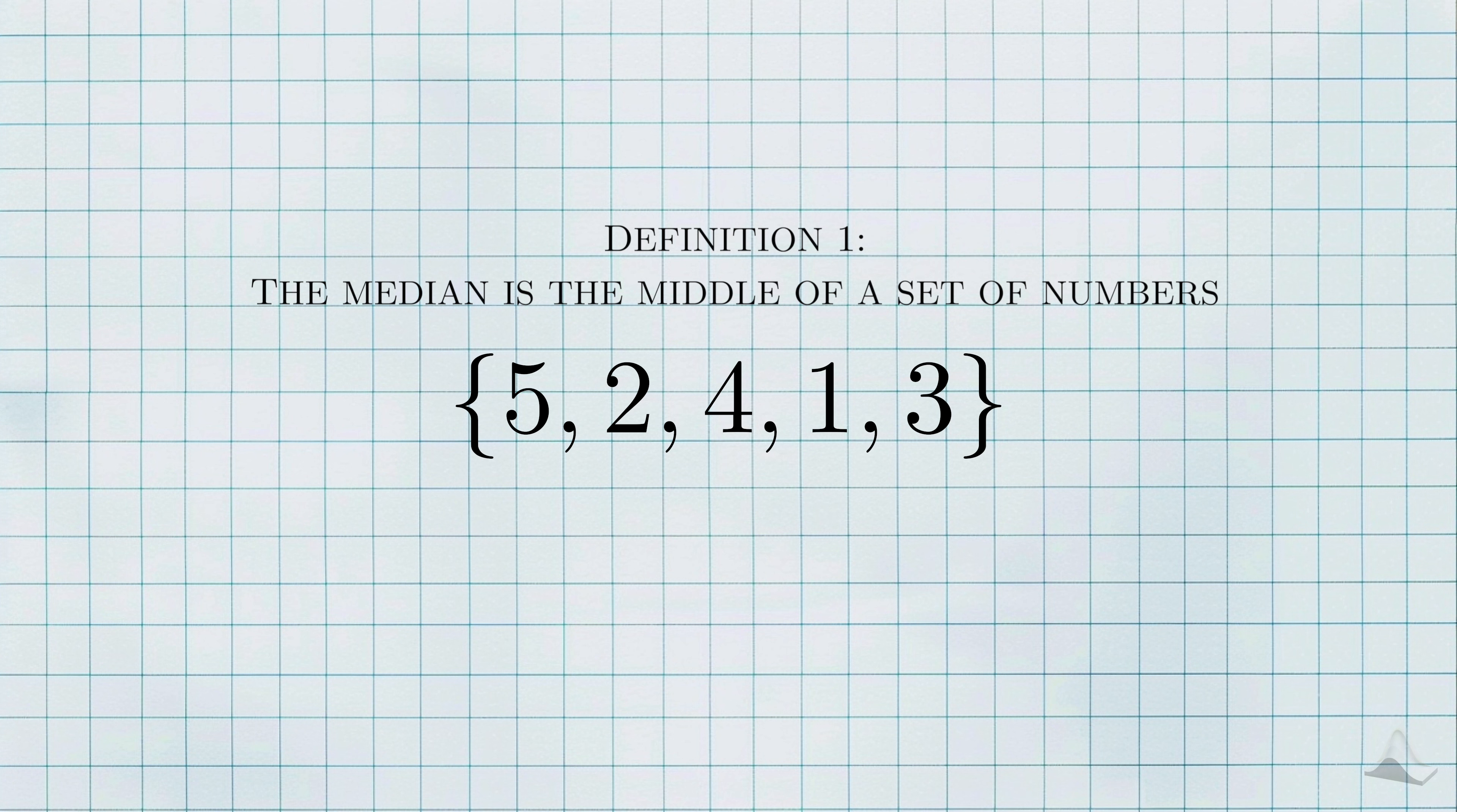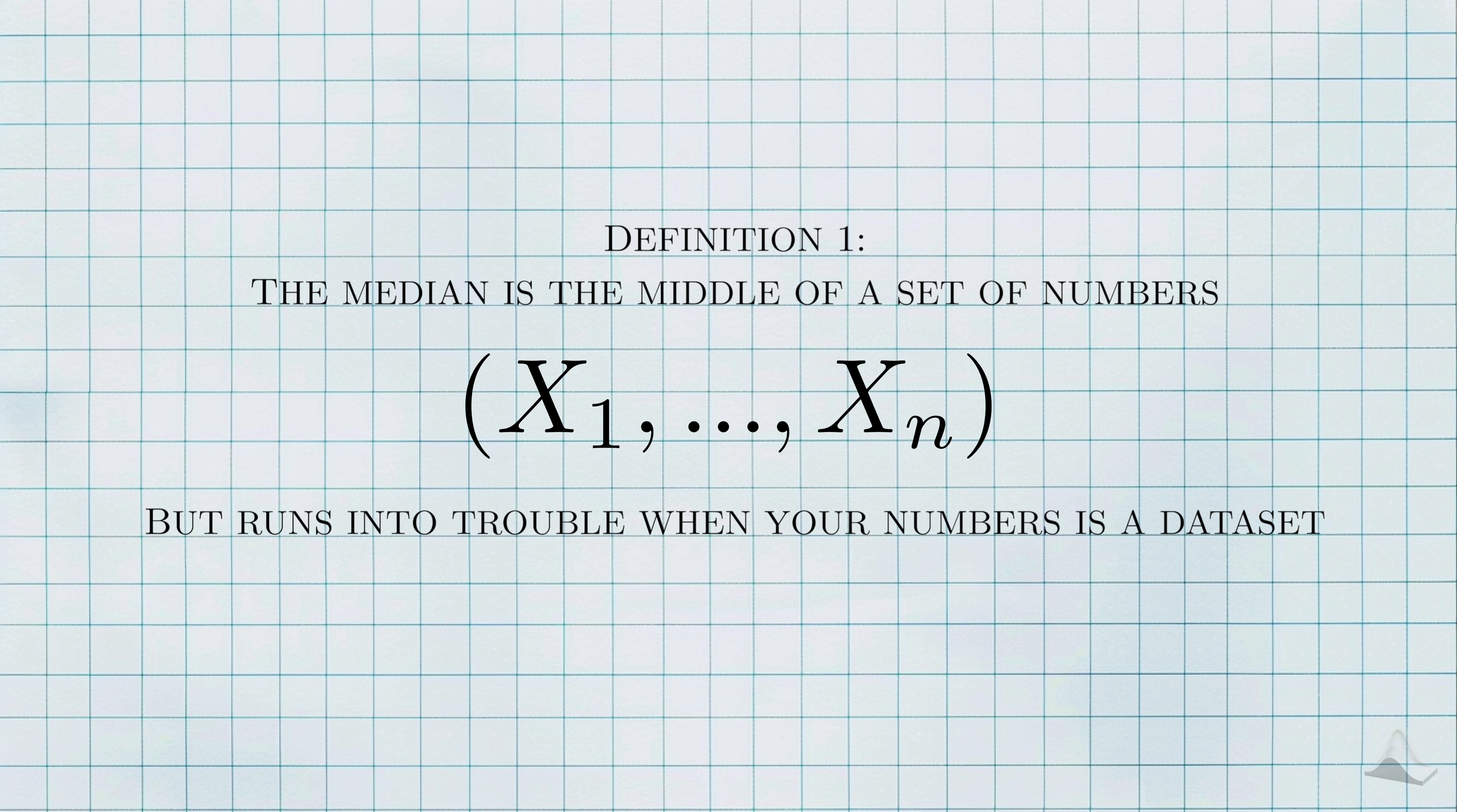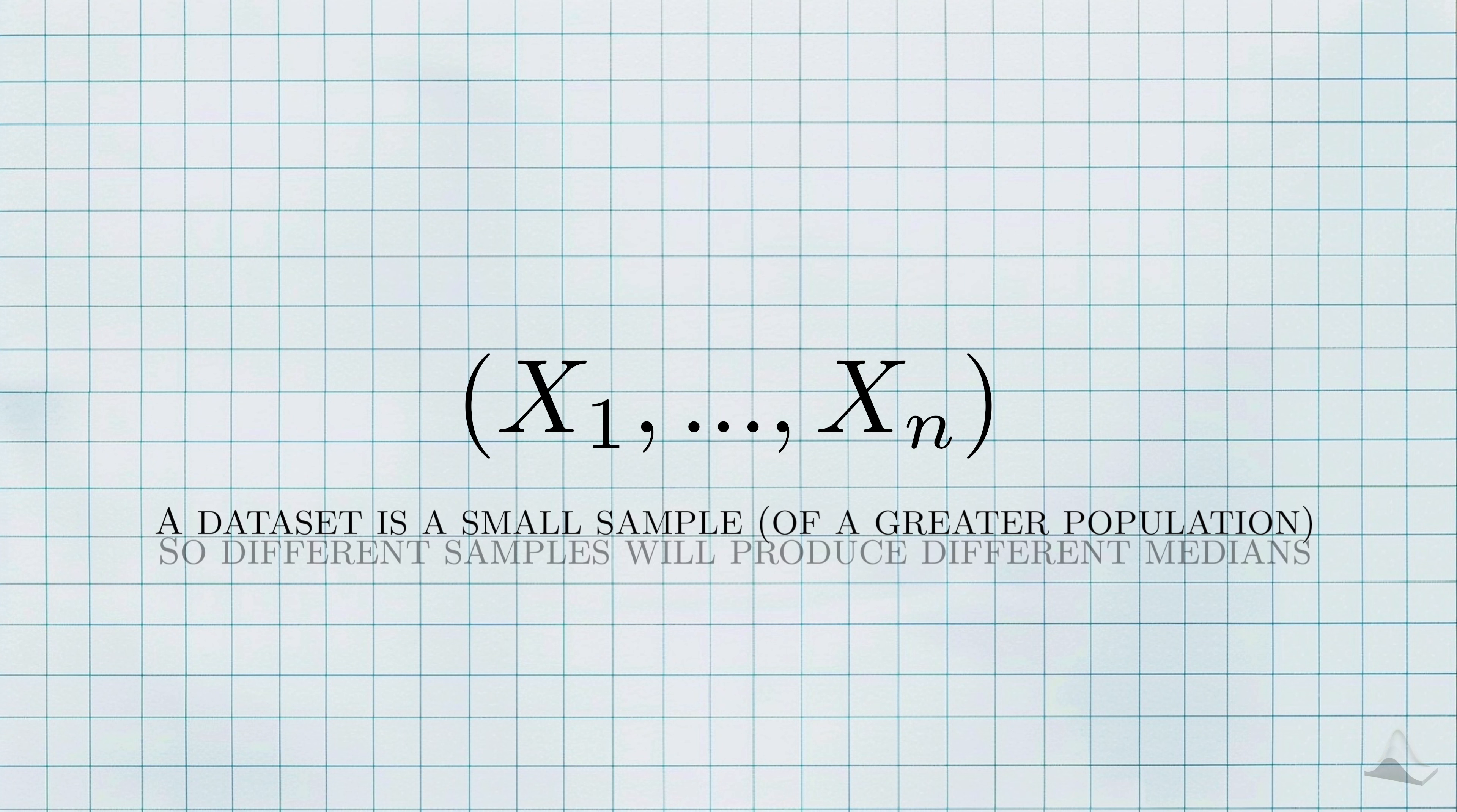First, you have to understand what the median is. The elementary definition is that the median is the middle of a set of numbers. To get this middle, we follow an algorithm. Sort these numbers in increasing order, then pick the middle one, or the average of the middle two if the number of elements is even. This algorithm works if you just have a simple set of numbers.